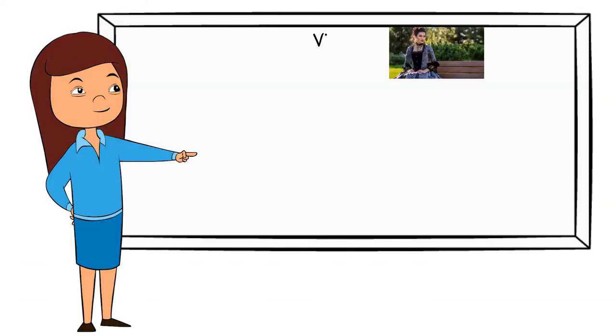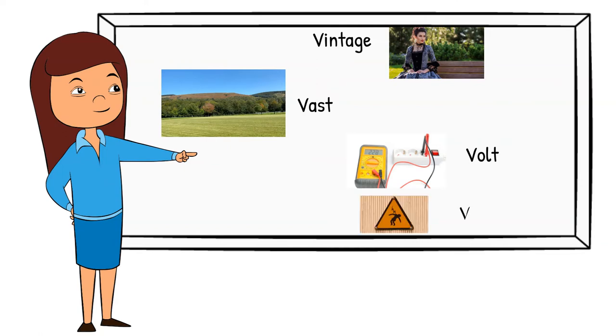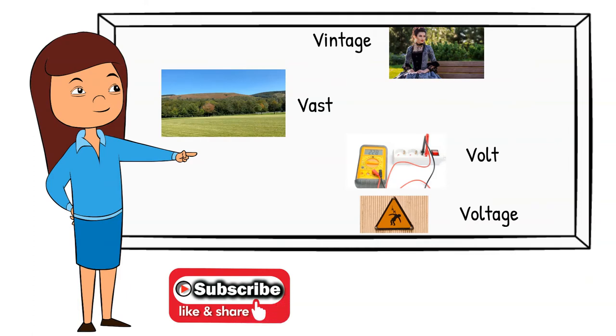Vintage. This dress is a vintage dress from the turn of the century, 100 years ago. Vast. This open field with these trees is a vast area. It's a whole lot. Volt. Dealing with electricity. It has voltage. And the voltage can cause harm or death. So be careful if you see a sign like this that says there is voltage around.